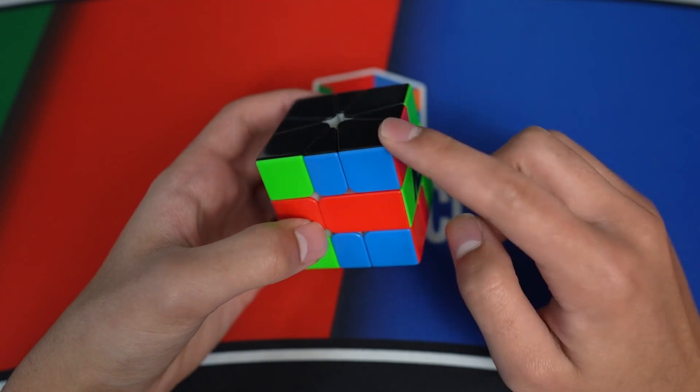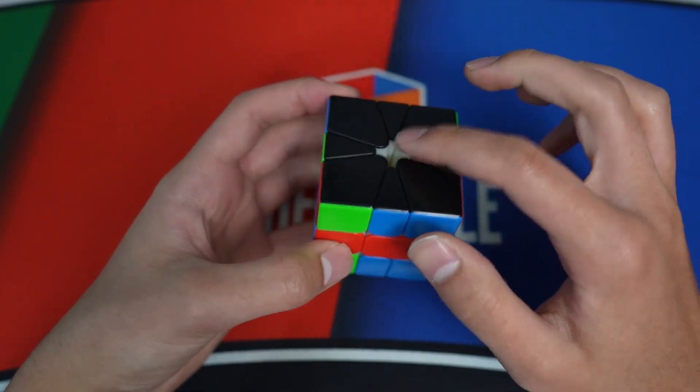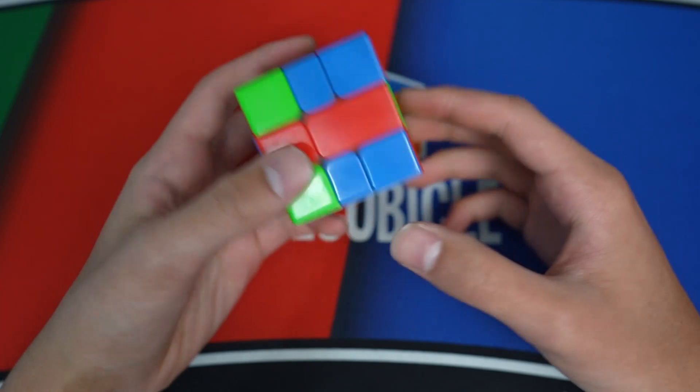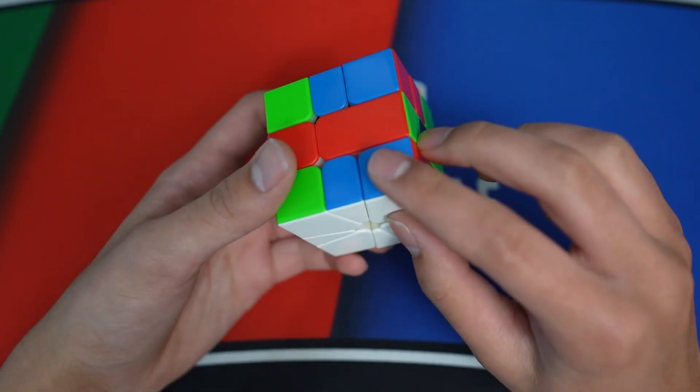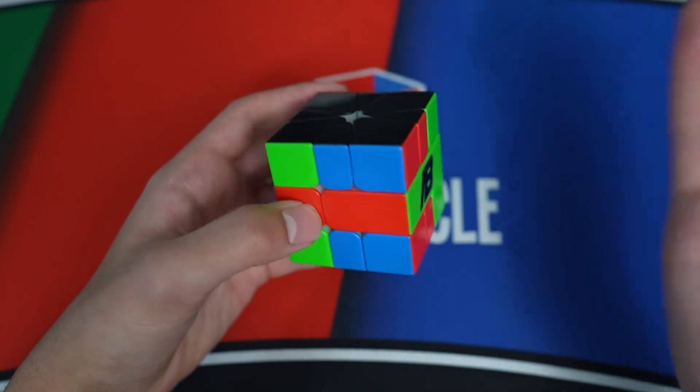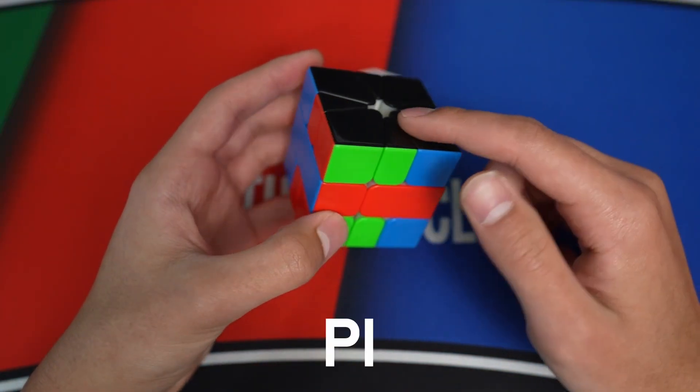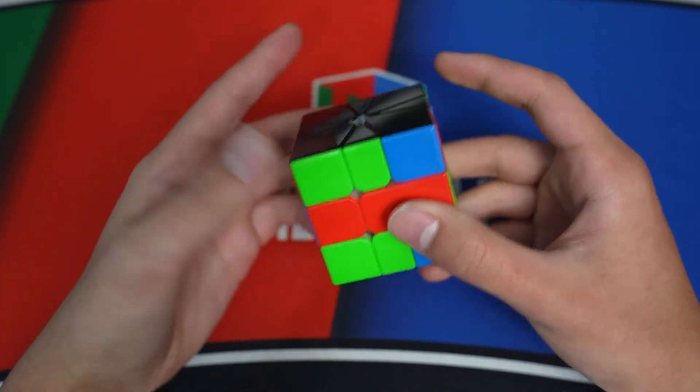Alright, those were all super similar, but now we're back to cases that are L or R. So this is PR, because when the headlights are in the back, this 2x2 block is on the right. So we have PR, doesn't matter which layer it's on. If the block is on the right, it's PR. Similarly, here is PL, because the block is on the left when the headlights are in the back.